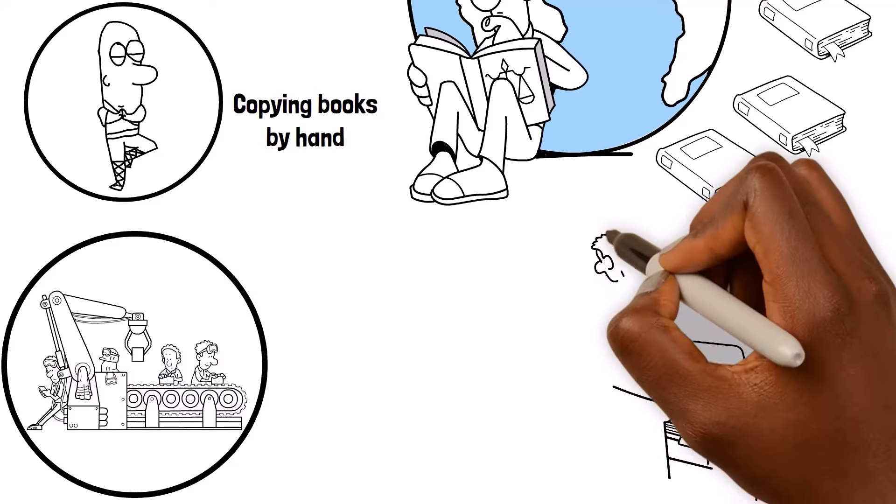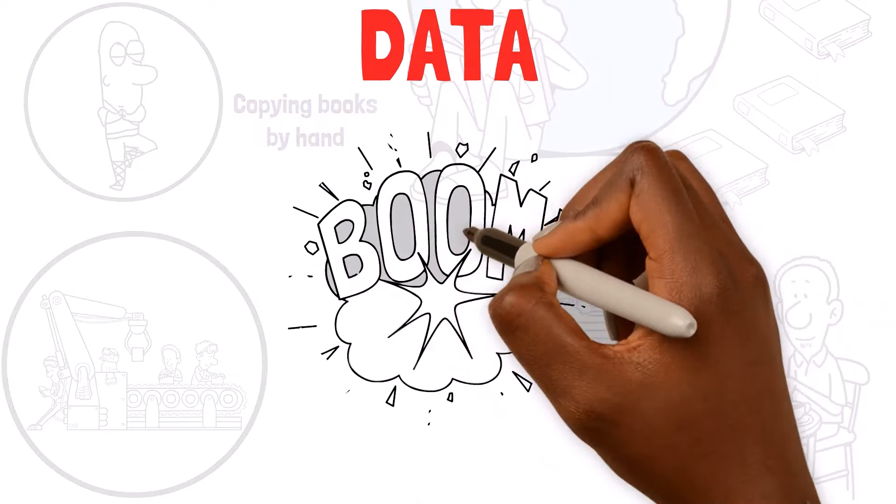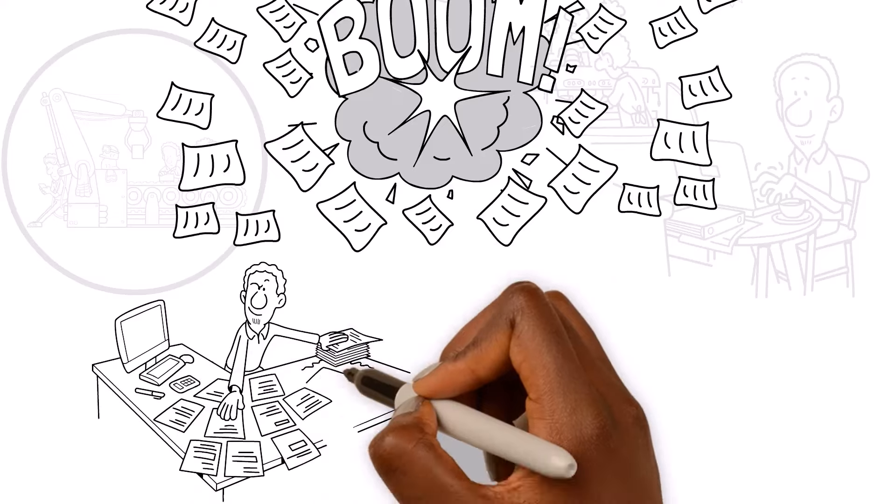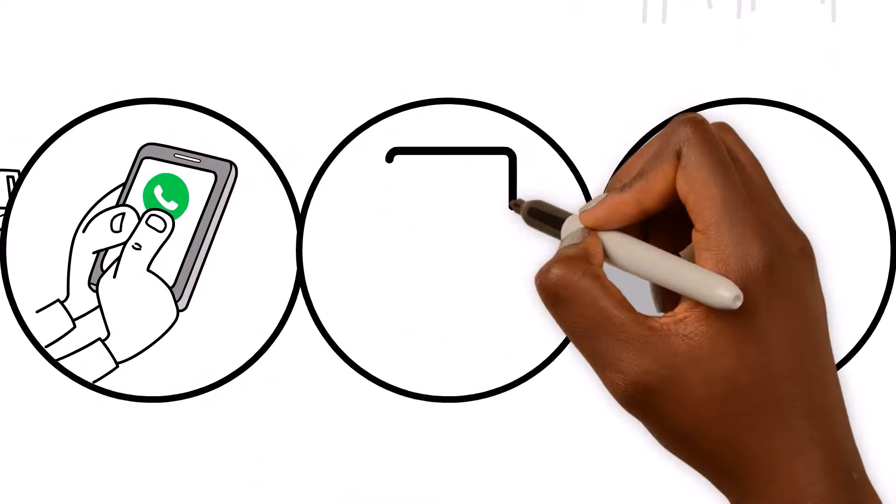But then, computers and the internet came along and changed everything. Data exploded. Suddenly, data wasn't just numbers on paper anymore, but everything from your texts and selfies to funny cat videos,